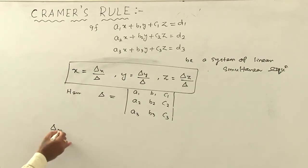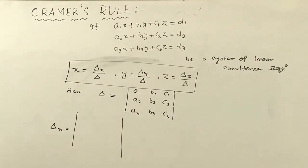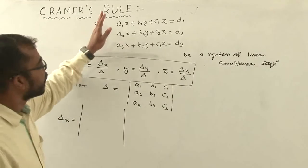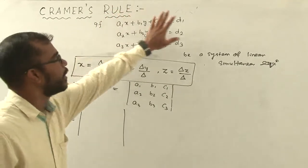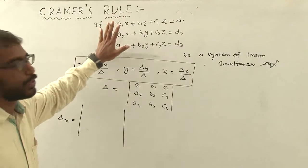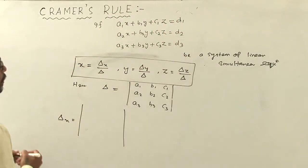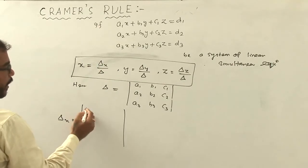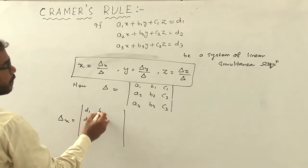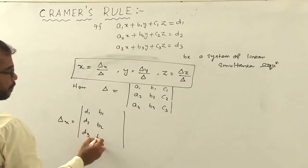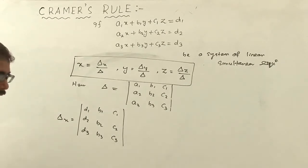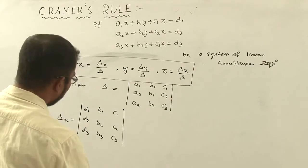What do you mean by Del x? Del x means the determinant where we replace the x column with the constants. That means in the x column we put the values of the constants d1, d2, d3. So Del x equals the determinant with d1, d2, d3 in the first column and b1, b2, b3 and c1, c2, c3 remaining.